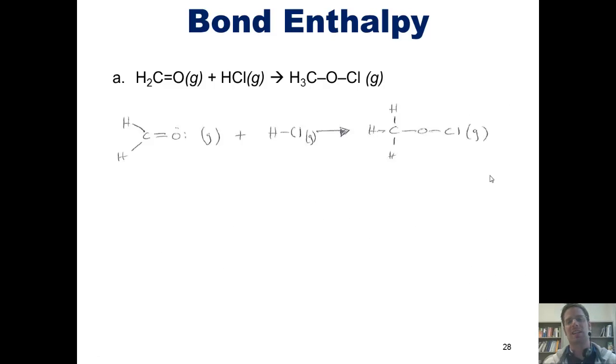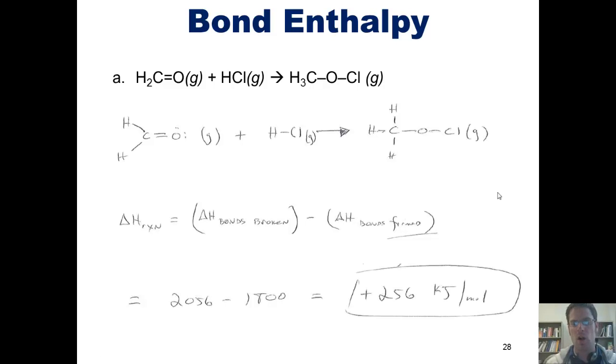Now, in order to calculate the overall enthalpy of the entire reaction, what I do is I take the sum of all of the bonds that have been broken and subtract from that the sum of all of the bonds formed. All of the bonds broken, by the way, are all of the bonds that we see on the left side of the equation. All of the bonds formed are the ones that we see on the right side of the equation. As we've already calculated those numbers, I can just throw them down here. 2,056 minus 1,800 gives me an overall delta H for this reaction of positive 256 kilojoules per mole, which means that this reaction is endothermic.